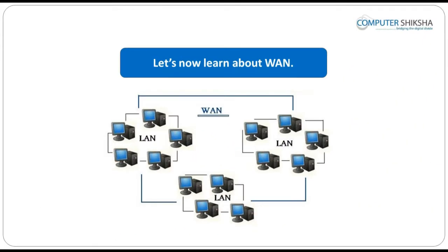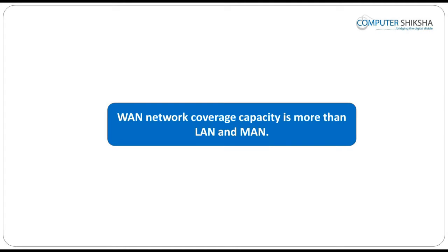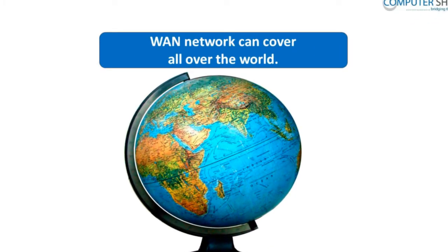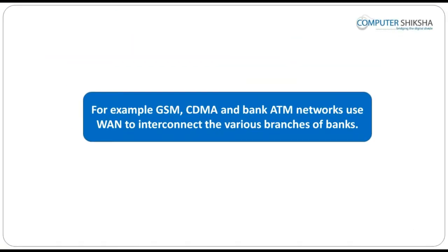Let us now learn about WAN. The full form of WAN is Wide Area Network and the coverage area of WAN is larger than LAN. These networks are spread all across the world and computers and phones are linked to it. This is mostly used for mobile phones and landlines. WANs offer wider coverage and have speeds of 10 megabytes to 100 megabytes.